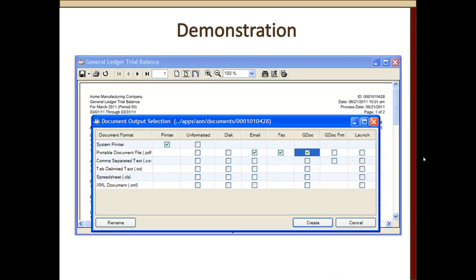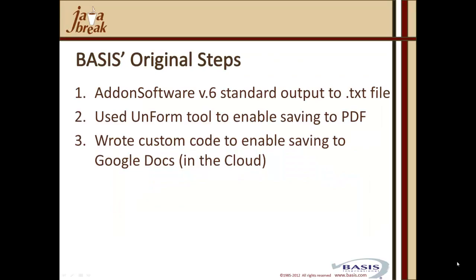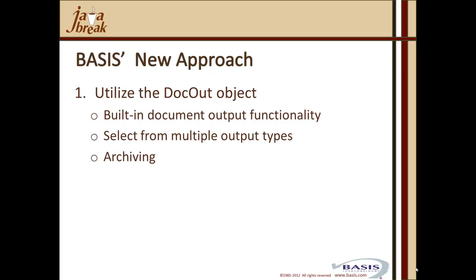Let me hand over to Paul to set the scene for Amir's demonstration. These are the steps we did internally at BASIS leading up to the adoption of Dockout. We took Add-on Software version 6 standard output and sent it to a text file. Next we used the Unform tool — a print stream manipulation tool — to save to a PDF format. Then we wrote custom code to enable saving to Google Docs in the cloud. Our new one-step approach was to use the Dockout object, which provides built-in document output functionality including all the various file types and the powerful archiving capability.